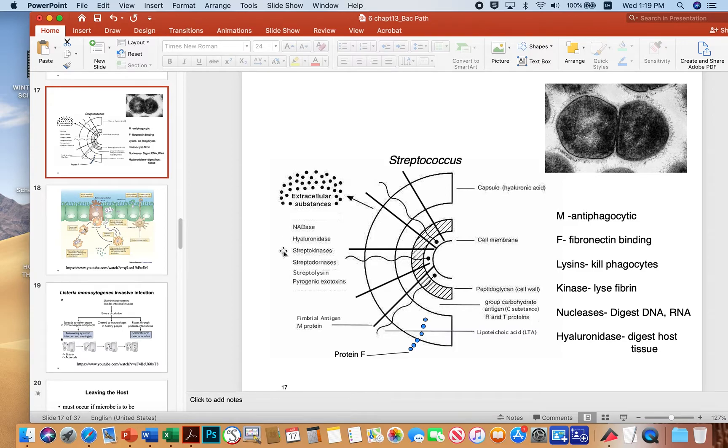The microbe produces streptokinases. These kinases, as you see here, can lyse fibrin, and so they can actually break up clots and allow the microbe to spread.